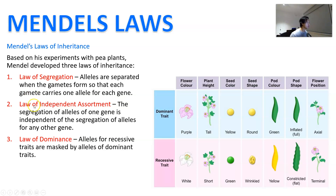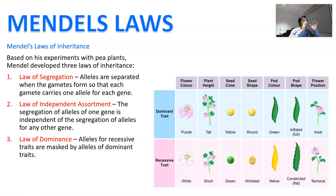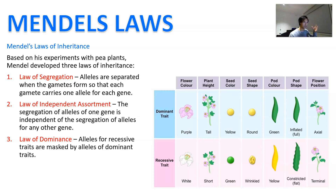The second law is called the law of independent assortment. You've seen this in the process of meiosis — the segregation of alleles of one gene is going to be independent of the segregation of alleles of another gene. This happens during metaphase when the chromosomes line up, pair up, and are split into different ends. That ratio is going to be independent of one another, so it's like a random card shuffle.